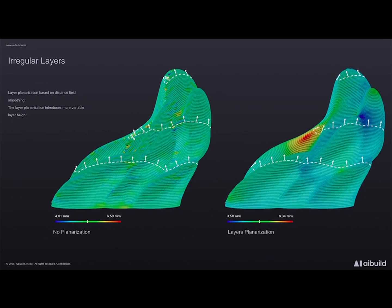There is another problem beyond tool orientation: because of the dimension of the tool and how complex layers can get, you may still have collisions. For that reason, we also have a way to planarize the layers by smoothing the geodesic field. This produces nicer curves but introduces variability in layer height — not a problem in some processes. Usually polymers are quite forgiving, but when you use metal this becomes a problem. It really depends on the type of process you're using.